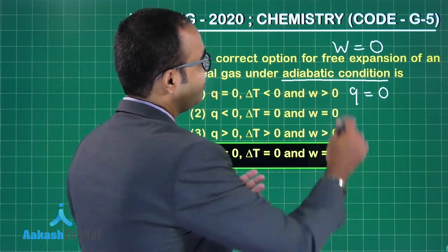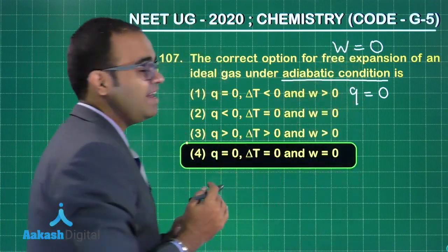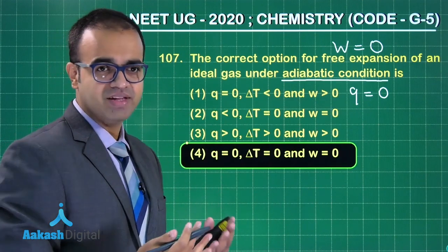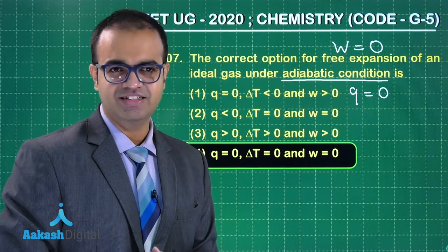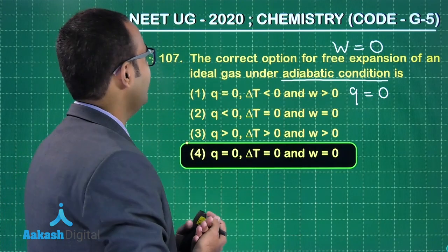Is this clear? If you want to find out about ΔT: if q is zero, w is zero, then ΔU will also be zero, right? So if ΔU is zero, then ΔT will also be zero. So let us move on to the next question, that is question number 108.